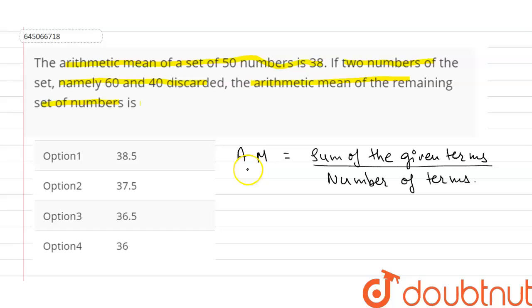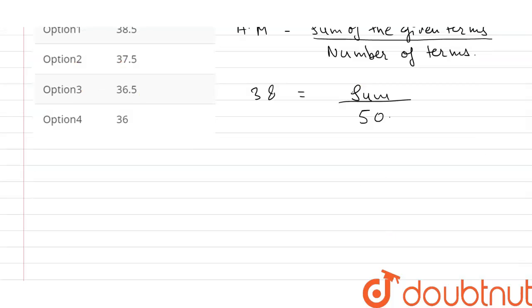We have given the arithmetic mean is equal to 38, and we have not given the sum of the numbers. So we can write this as sum divided by the number of terms, which is given as 50. From here we can write the sum is equal to 38 times 50. So the value of sum is equal to 1900.